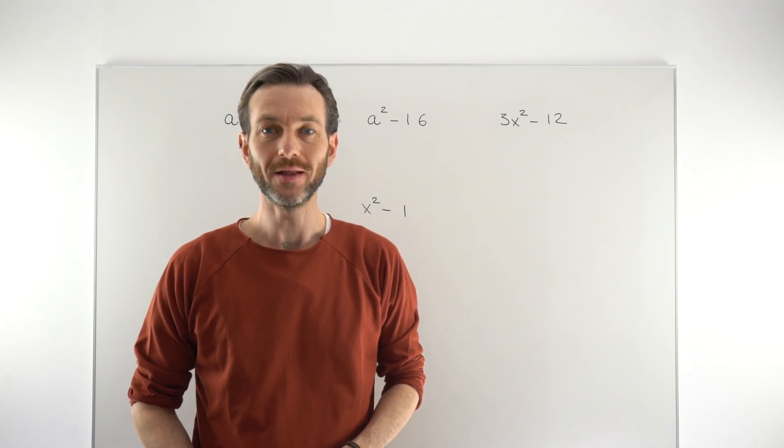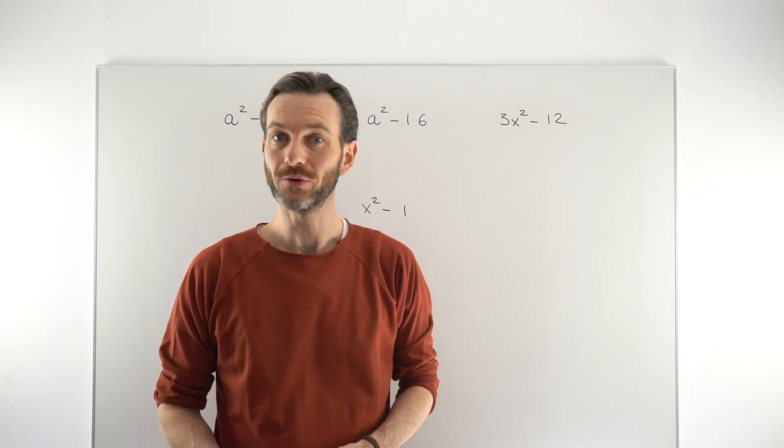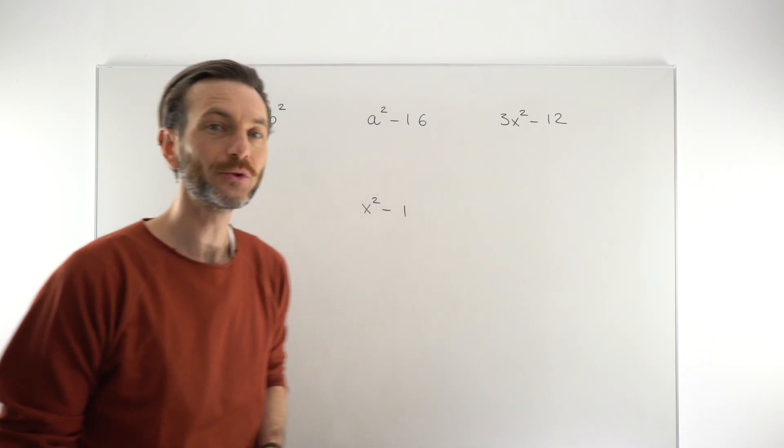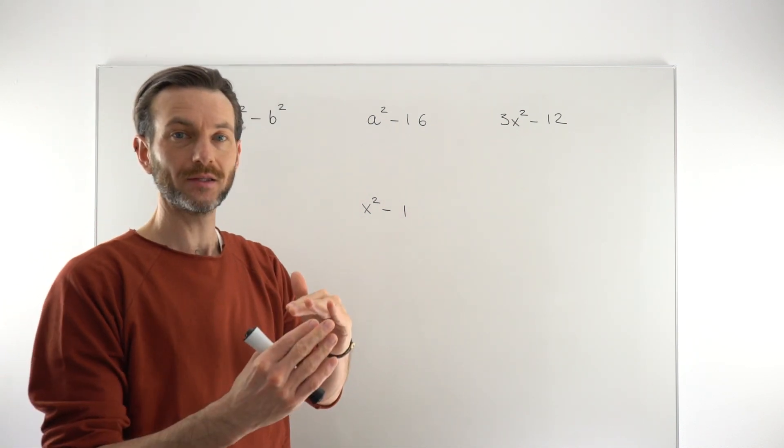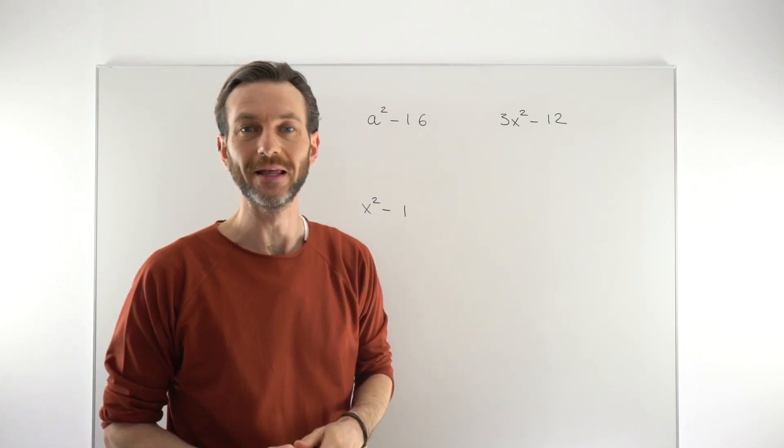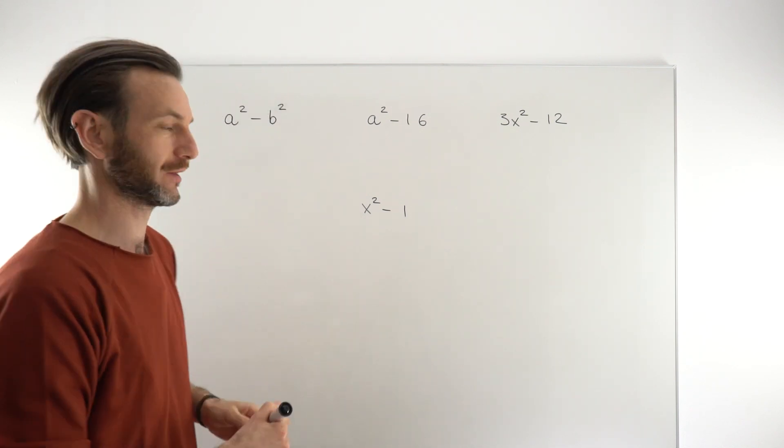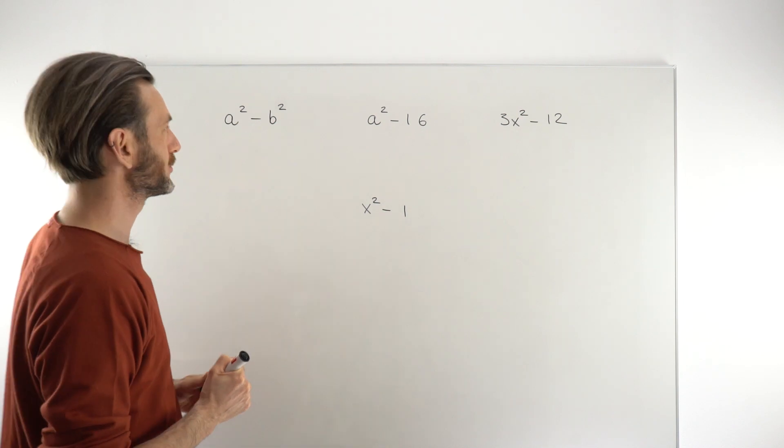In this class we're going to take a look at how you factorize expressions as a difference of two squares. So a difference of two squares literally means something squared minus something squared. A difference in mathematics means minus, basically the difference between two numbers.